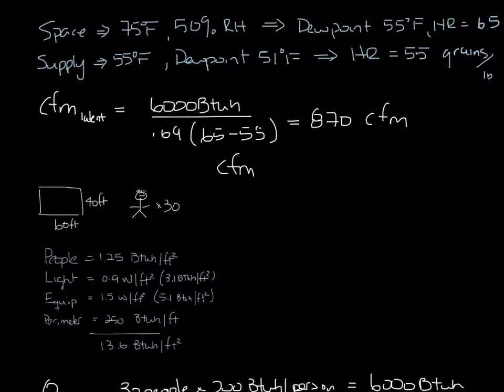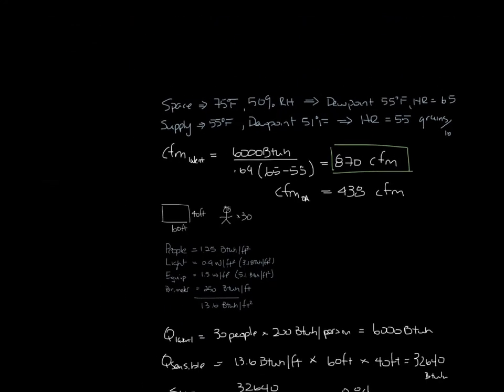We calculated earlier that the CFM needed for the outside air ventilation requirement is 438 CFM. So you can see from this, you need to supply 870 CFM to handle the latent load, which will also handle the ventilation requirement.